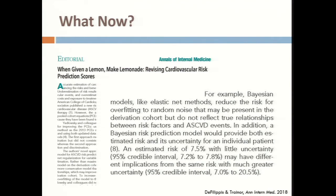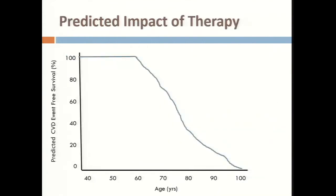So if you calculate a risk score on your patient of 7% risk of a cardiac event over the next 10 years, but the confidence interval around that is somewhere between 1% and 20%, then you're thinking you need to do something else — maybe a coronary calcium score or a stress test — to further risk stratify the patient. As opposed to getting a 7% back where your 95% confidence interval is somewhere between 6% and 8%.